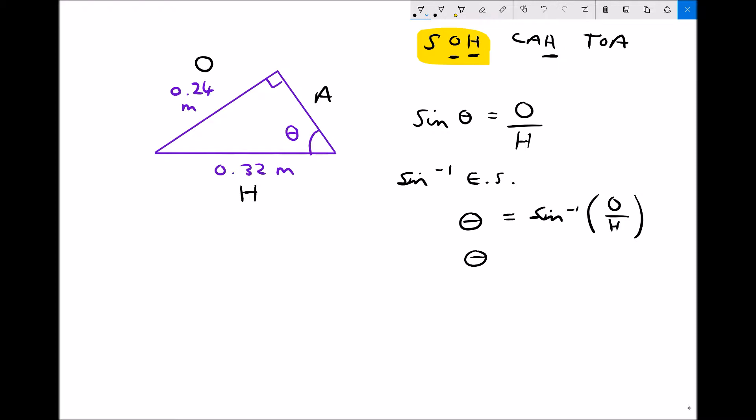So to finish, theta equals sine to the minus 1. The opposite we know is 0.24 meters. The hypotenuse we know is 0.32 meters. And if we run that through our calculators, we'll get theta equals 48.59 degrees.